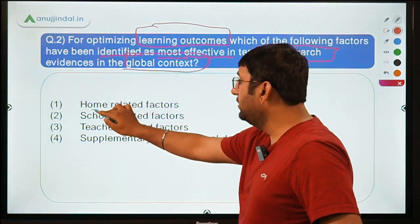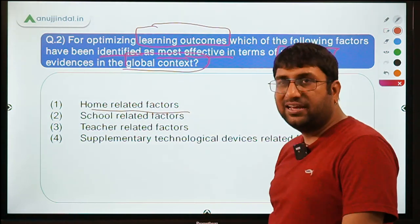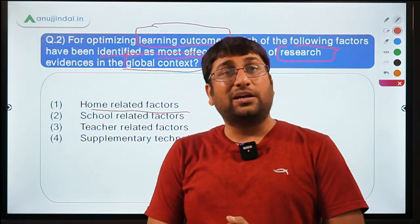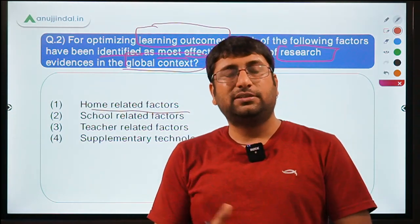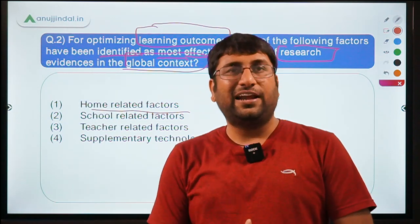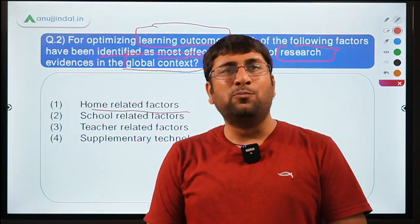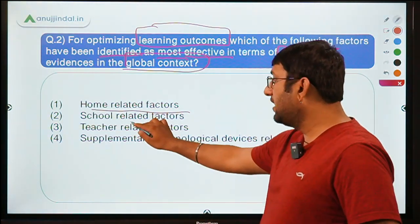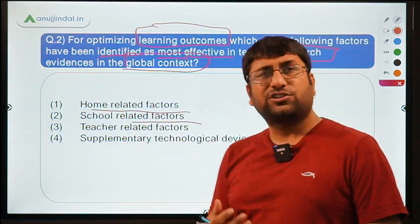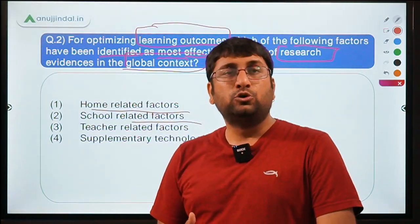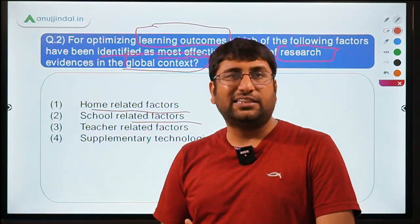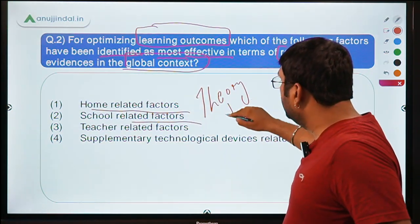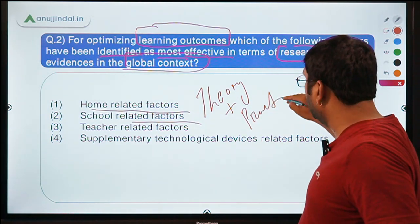Let's look at the options. Option A: home-related factors — does a positive home environment with parents, siblings and friends motivate students? Option B: school-related factors — the school infrastructure, faculty quality, and what initiatives the principal takes to blend theory and practical knowledge. All of these factors do make a difference in your understanding.